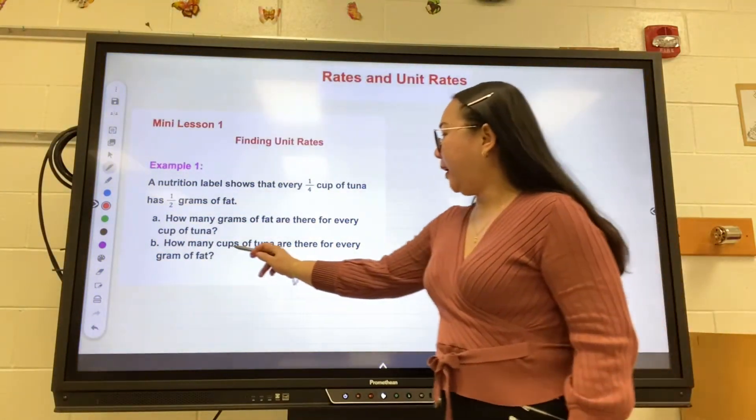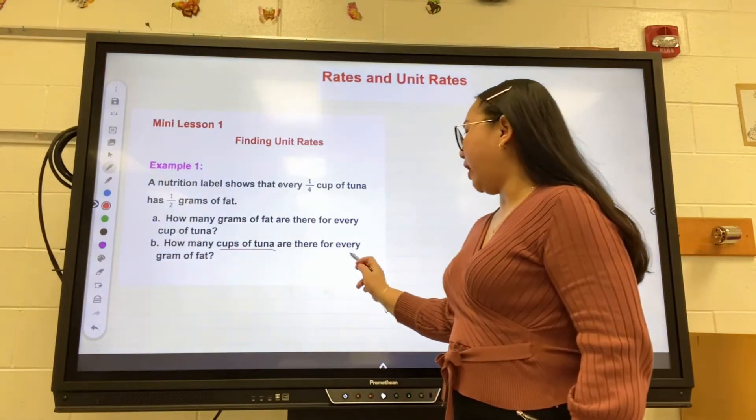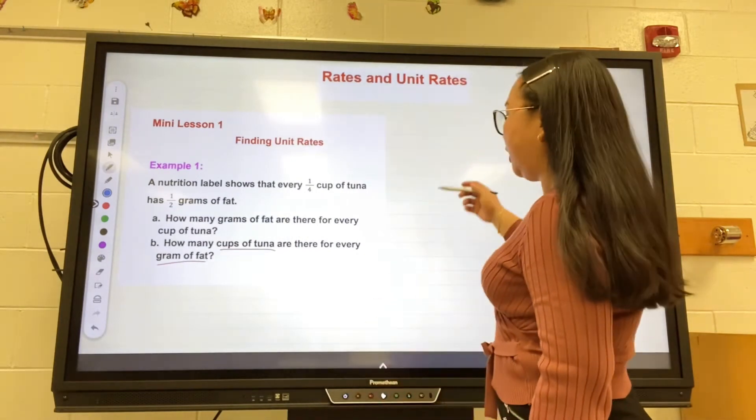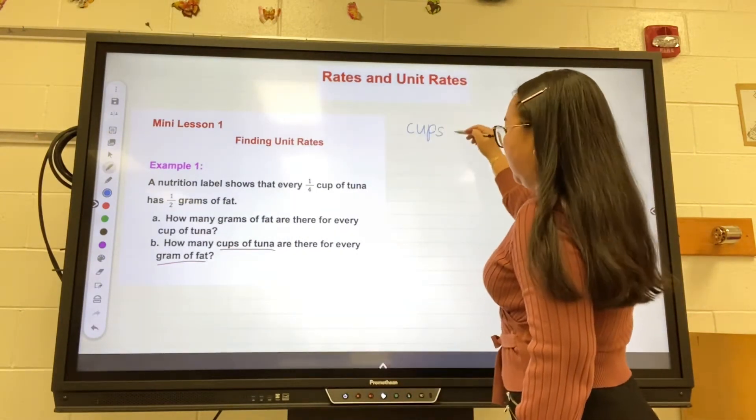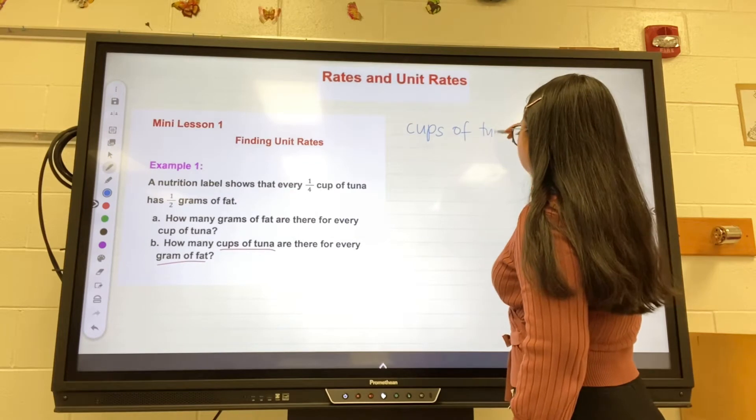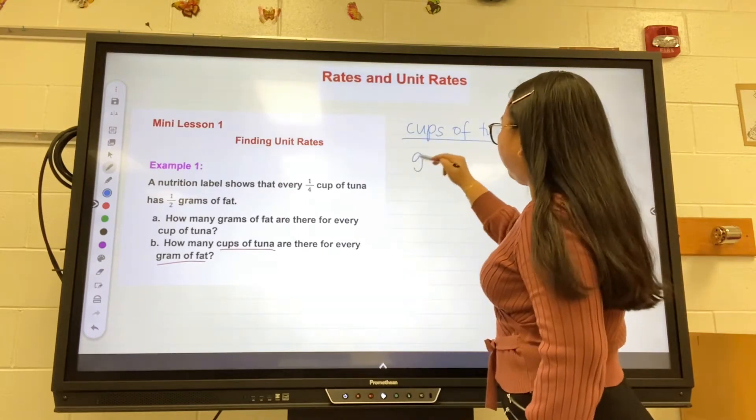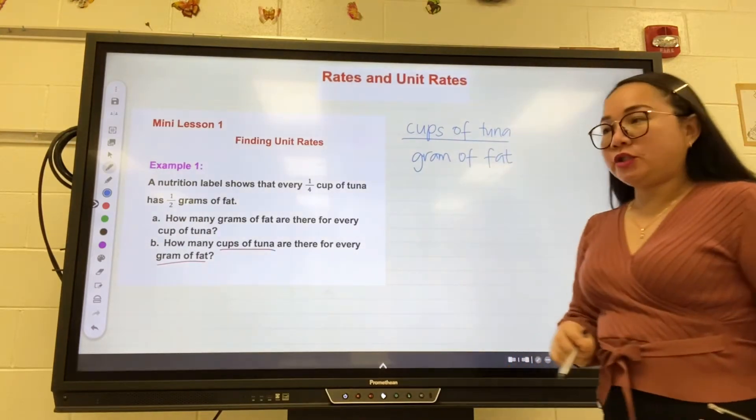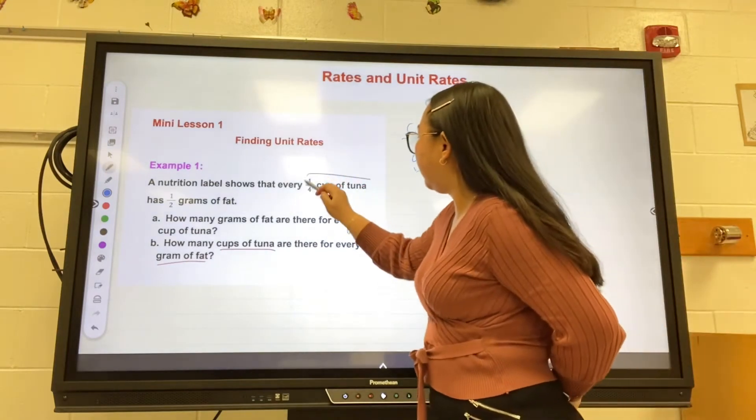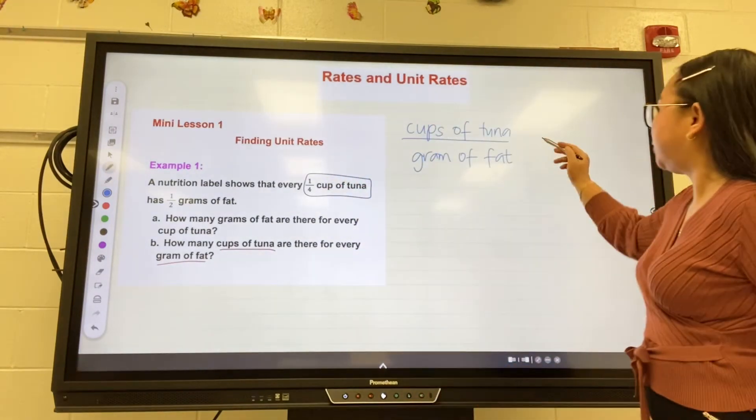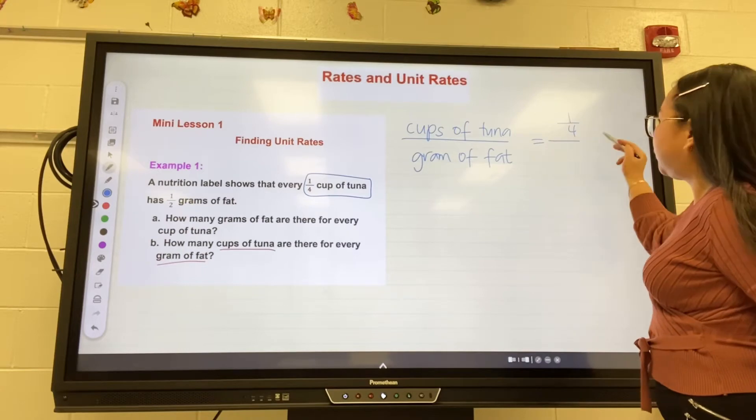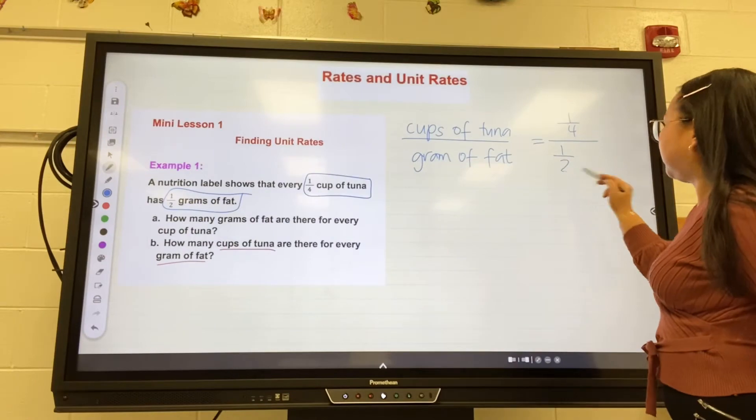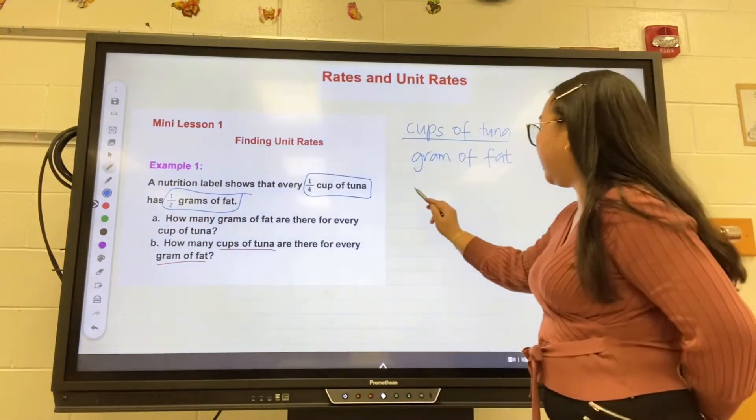Part B: How many cups of tuna are there for every gram of fat? So we can write the ratio cups of tuna to gram of fat. Going back to the problem, we know that there is one-fourth cup of tuna, so write down one-fourth.